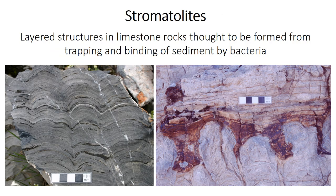So what is a stromatolite? Well, it's just a layered structure in limestone rocks, often forming dome shapes, column shapes, or sometimes cone shapes. The photos here show some examples of stromatolites. The dome-shaped ones on the left are about 500 million years old and come from Nevada, and the more column-shaped ones on the right are more than 1 billion years old and come from near Death Valley in California.